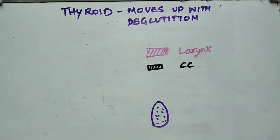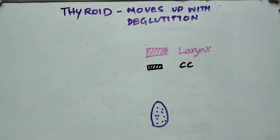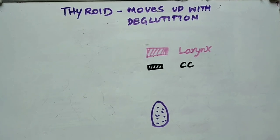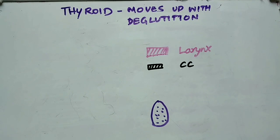In this video I am going to talk about thyroid swelling that is moving upwards and downwards with deglutition. This is one of the common clinical questions they will ask you in your thyroid case. Let us see some anatomy about the thyroid gland.